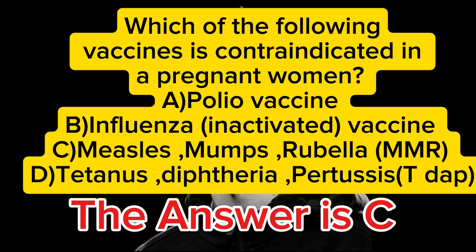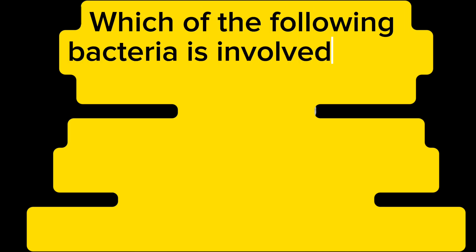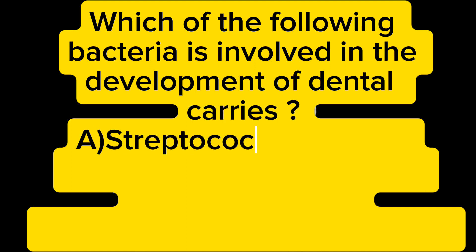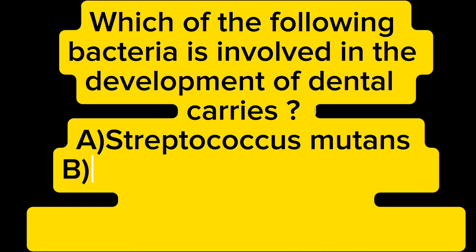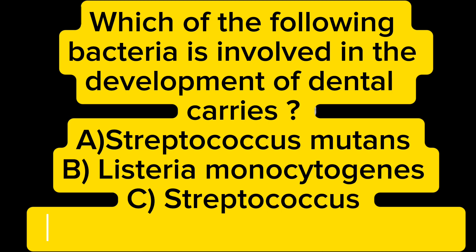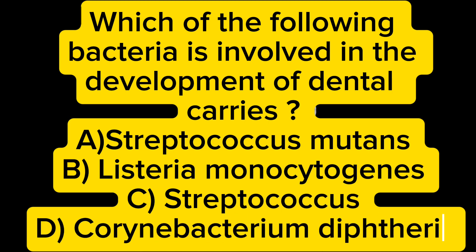Which of the following bacteria is involved in the development of dental caries? A) Streptococcus mutans, B) Listeria monocytogenes, C) Streptococcus pyogenes, D) Corynebacterium diphtheriae. The answer is A — Streptococcus mutans.